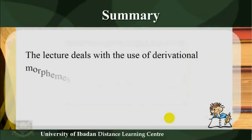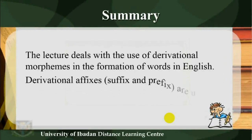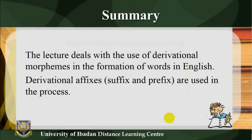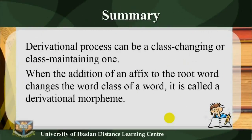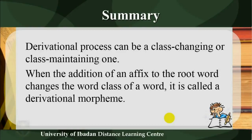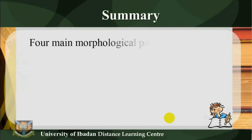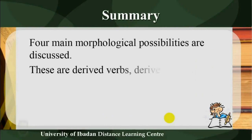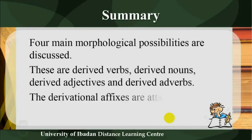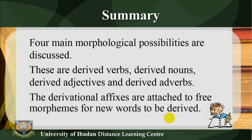Study session summary: The lecture deals with the use of derivational morphemes in the formation of words in English. Derivational affixes — suffix and prefix — are used in the process. The derivational process can be class-changing or class-maintaining. When the addition of an affix to the root word changes the word class, it is called a derivational morpheme. Four main morphological possibilities are discussed: derived verbs, derived nouns, derived adjectives, and derived adverbs. The derivational affixes are attached to free morphemes for new words to be derived.